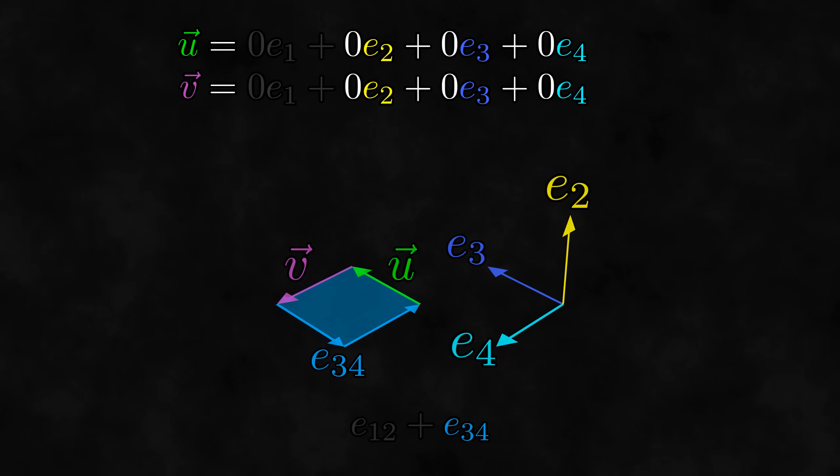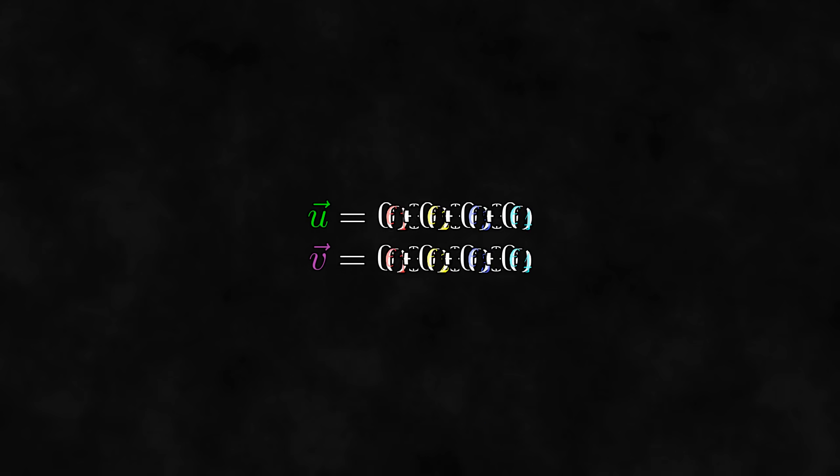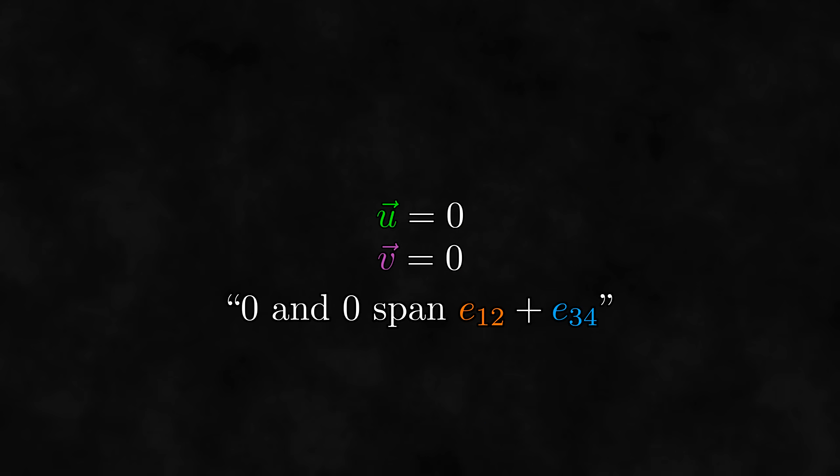Wait a minute, this means that both of the vectors are just zero. But two copies of the zero vector can't possibly span E12 plus E34. We've arrived at something preposterous. So what's going on?